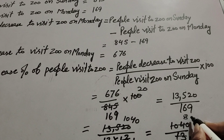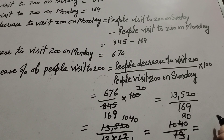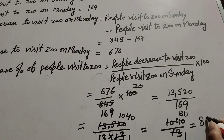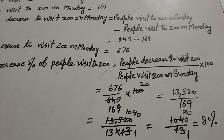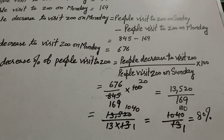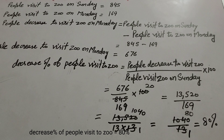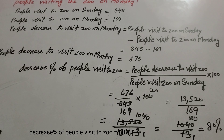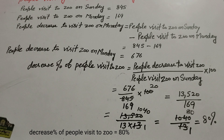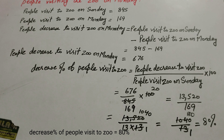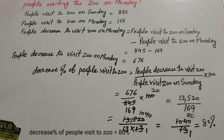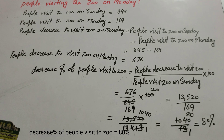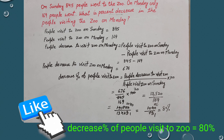So the decreased percentage of people visiting is equal to 80%. Thanks for watching — like, comment, and share my video, and subscribe to my YouTube channel.